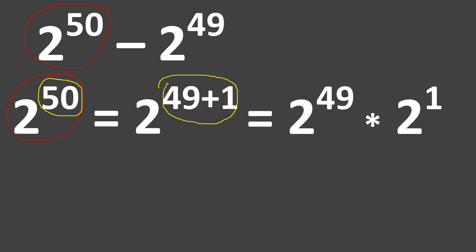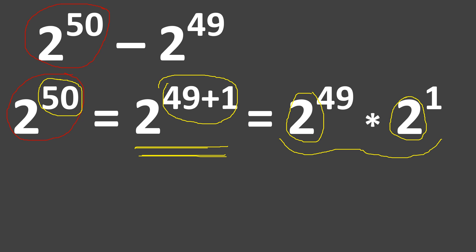They have a common base, which is 2. So you can split it like this such that when they come together — when you multiply 2 raised to the power of 49 times 2 raised to the power of 1 — you get back the original expression. Now that 2 raised to the power of 50 is expressed as 2 raised to the power of 49 times 2 raised to the power of 1, we will substitute accordingly.